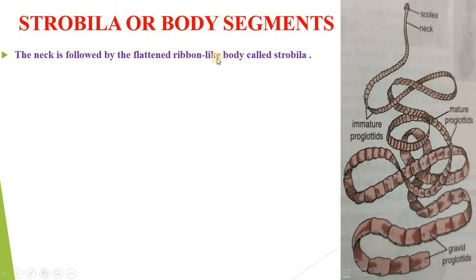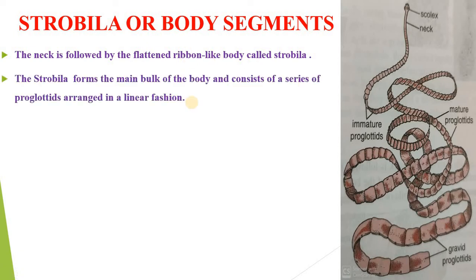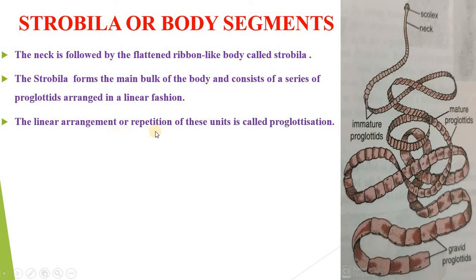Next is the strobila or body segments. The neck is followed by a flattened, ribbon-like body. A proglottid is one complete unit of the body having a complete set of genitalia and surrounding tissue. The linear arrangement or repetition of these units is called proglottization. The proglottids internally remain connected together by muscles, excretory vessels, and nerve cords. However, proglottids are not metameric segments like those of annelids, arthropods, and other animals, because these are independent self-contained units, each with a complete set of reproductive organs — both male and female — and a part of the excretory and nervous system. They are found at the zone of proliferation situated anteriorly behind the scolex; therefore the youngest proglottid is next to the neck and the oldest is at the posterior end of the strobila.